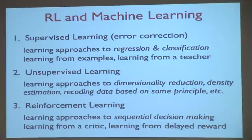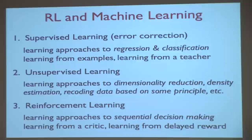Supervised learning — you've all seen it — learning from examples, classification, regression. Unsupervised learning: dimensionality reduction, clustering, density estimation. And reinforcement learning is learning approaches to sequential decision making, learning from a critic, learning from delayed reward, which we'll talk about in great detail.